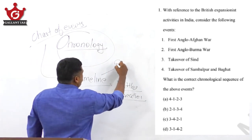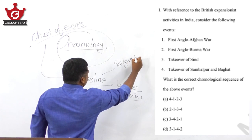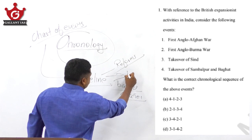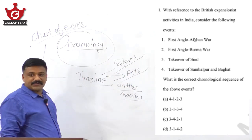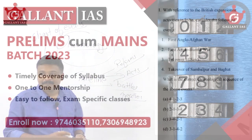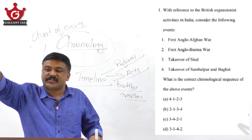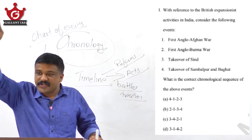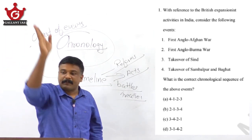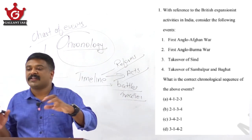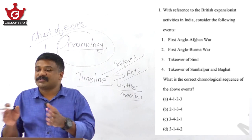Prepare a timeline of various reforms, a timeline of various acts, and constitutional acts being passed. You can prepare a chart of each category — various battles, various treaties, various reforms, legislative reforms, constitutional reforms, and educational reforms. That is one of the solutions to score in chronology-type questions.